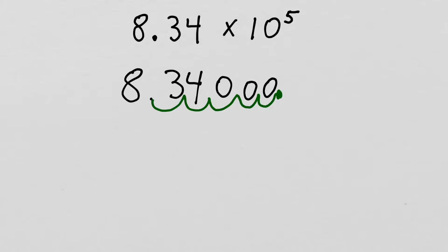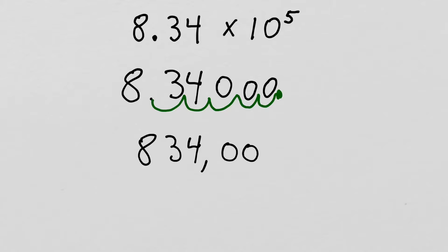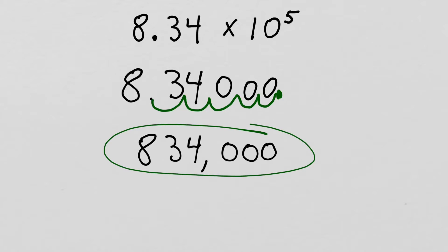Now it's probably a good idea to rewrite this in a way that we don't have our jumps all over it. So we can write our number as 834,000. Okay, that's our final answer.